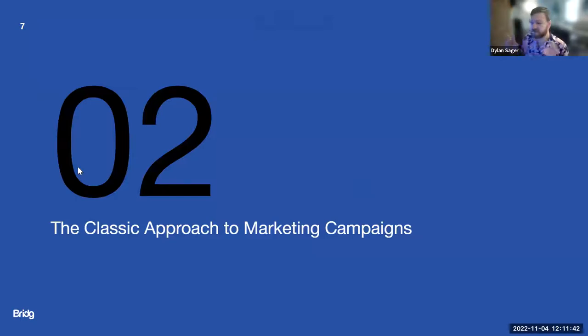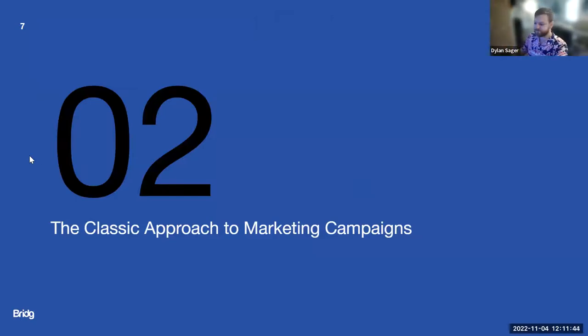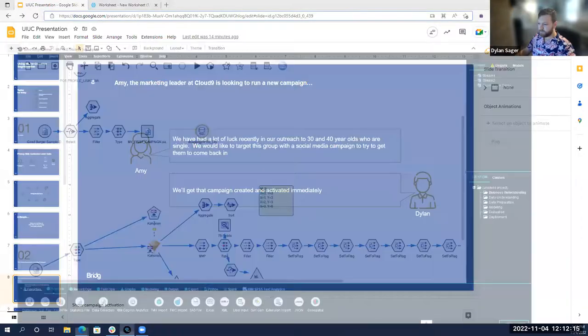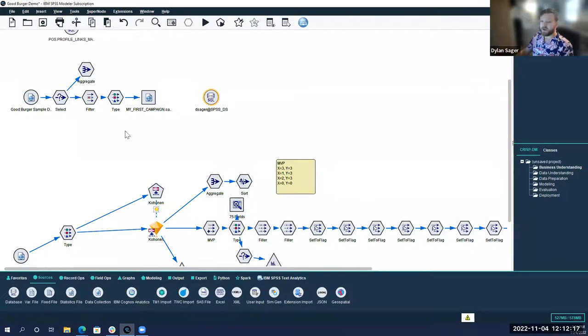Getting into the classical approach to marketing, this is what we'll see a lot. This is what our clients first come in, kind of what we expect. They'll say something like we've had a lot of luck in our outreach to 30 and 40 year olds who are single. We'd like to target this group with a social media campaign to try to get them to come back in. We'll say okay, we can create that campaign pretty easily.